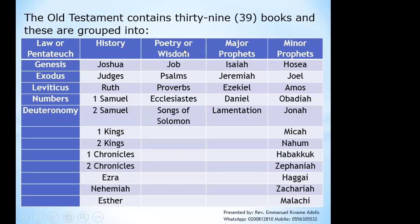We come to the poetry or the wisdom books: Job, Psalms, Proverbs, Ecclesiastes, Song of Songs, or Song of Solomon. And then you look at the major prophets: Isaiah, Jeremiah, Ezekiel, Daniel, Lamentations. The minor prophets: Hosea, Joel, Amos, Obadiah, Jonah, Micah, Nahum, Habakkuk, Zephaniah, Haggai, Zechariah, Malachi.